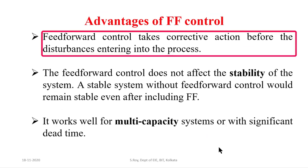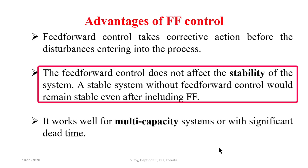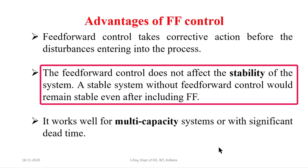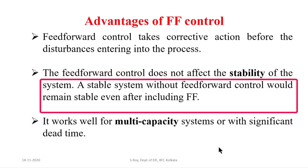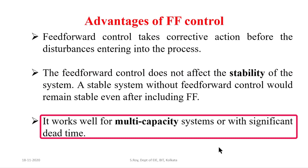Feedforward control is advantageous because it takes corrective action before disturbances enter and hamper the process, maintaining the control system perfectly. When combined with feedback or cascade control, the stability of the system is not changed — a previously stable system remains stable. Feedforward control also works well for multi-capacity systems and systems with high dead time.